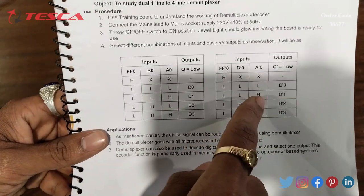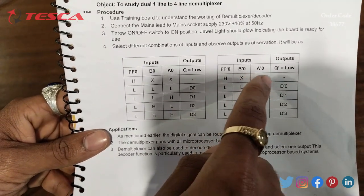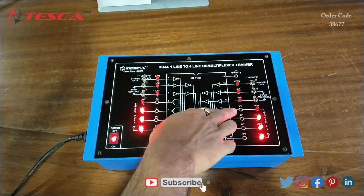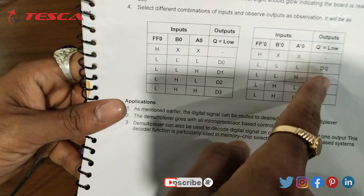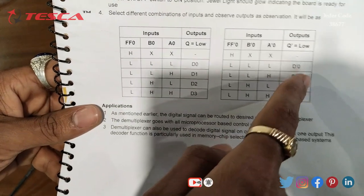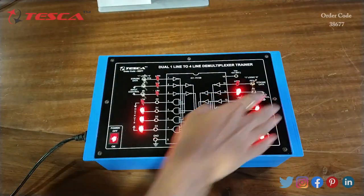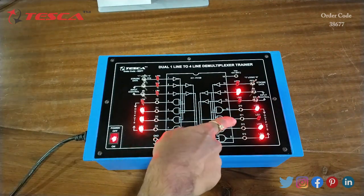When we keep all FF0, B0 and A0 low, we are getting D0 as low output as mentioned in the truth table. Similarly, if we give high at A0, we are getting low at D1.